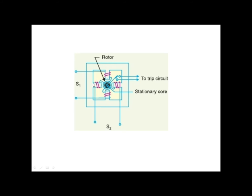These currents produce flux. The interaction of these two fluxes produces the torque, and the rotor rotates in the same direction as the rotating magnetic field.